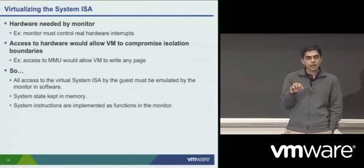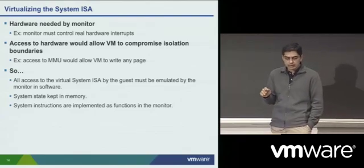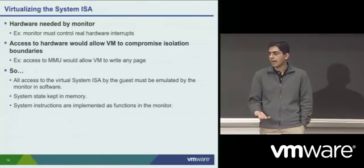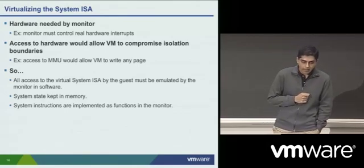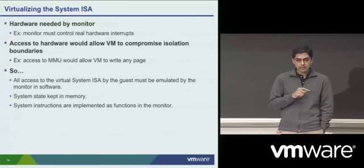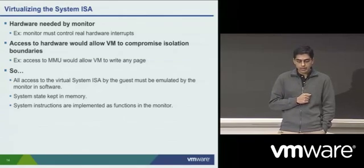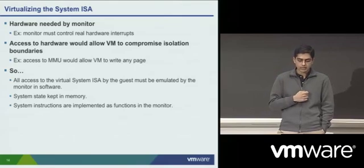The virtual machine monitor itself sits on the underlying hardware and manages all of the hardware's resources. This means that the monitor itself must control the hardware interrupts — it should have its own interrupt handlers installed on the underlying hardware, and it should have direct access to the IO devices. Any access to this set of resources like interrupts, IO devices, and control registers should actually be virtualized as far as the virtual machines themselves are concerned.